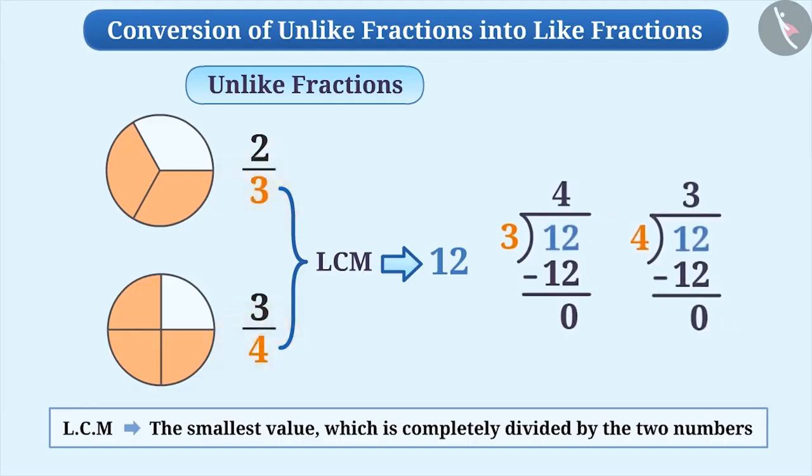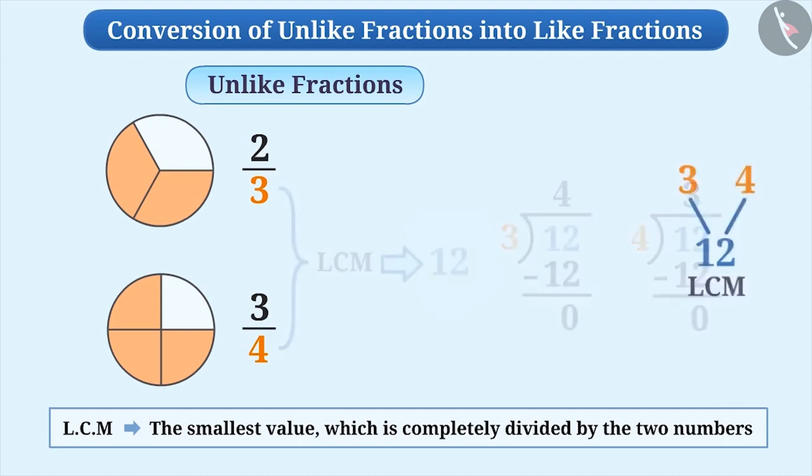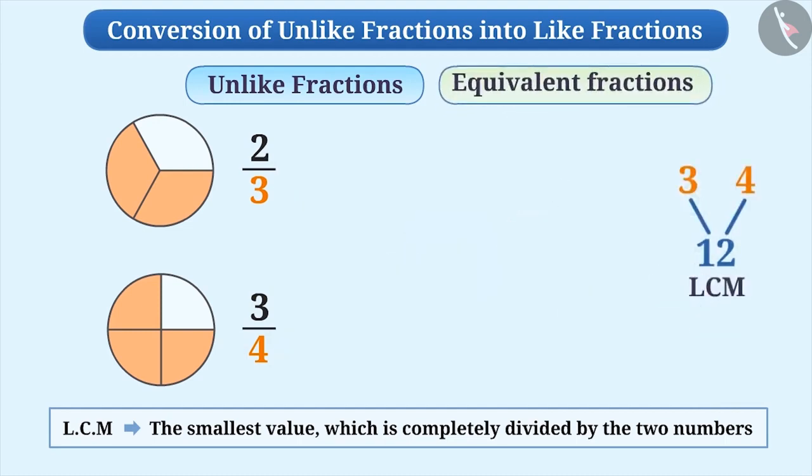Here, the LCM of denominators 3 and 4 is 12. We now find the equivalent fractions of both the fractions whose denominator will be the LCM. For this, we multiply the numerator and denominator of 2 by 3 by 4 and the numerator and denominator of 3 by 4 by 3.